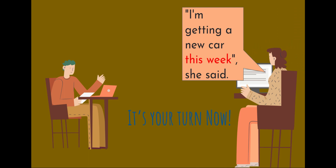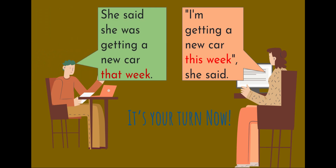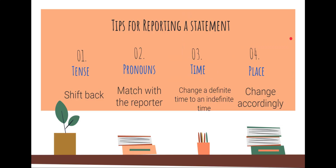Now your turn. This is the direct statement: 'I'm getting a new car this week,' she said. Five seconds for you to think of your answer. Are you correct? The answer is: 'She said she was getting a new car that week.' We need to change the time expression from 'this week' to 'that week.'